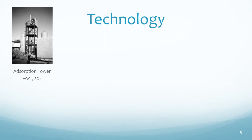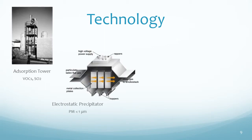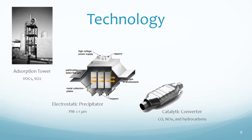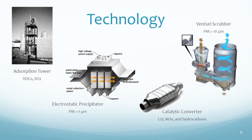New technologies have been developed to comply with newer air quality standards. Applied at point sources of air pollution, these control devices either destroy pollutants entirely or remove them before exhaust is released. Different methods must be used for different chemical compounds and particulate sizes.